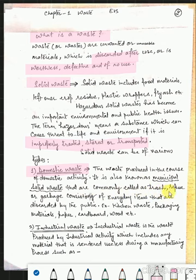It is also known as municipal solid waste that are commonly called as trash, refuse, garbage and it is consisting of everyday items that are discarded by the public. Now here is the examples of domestic waste.